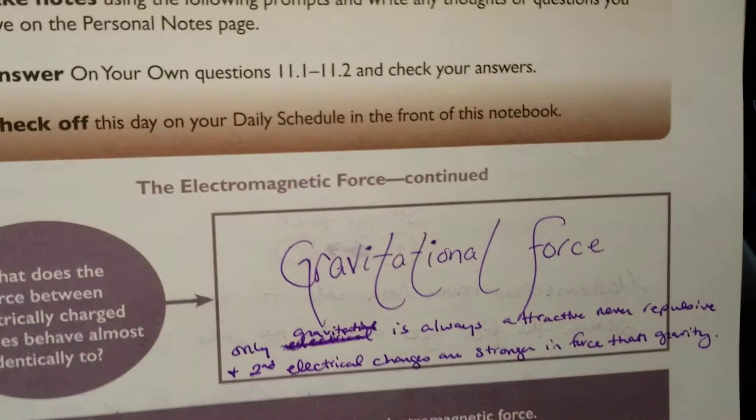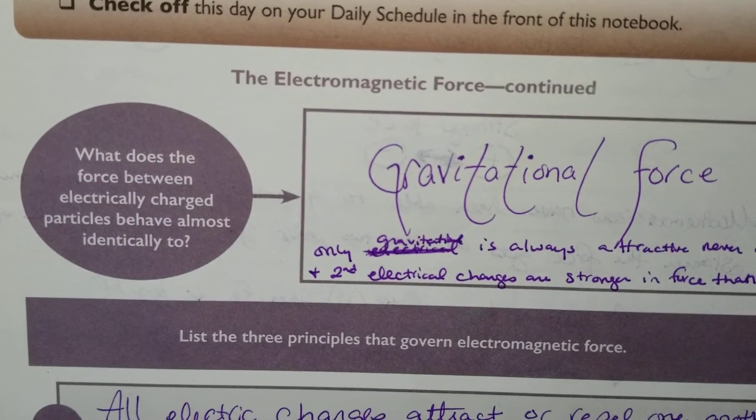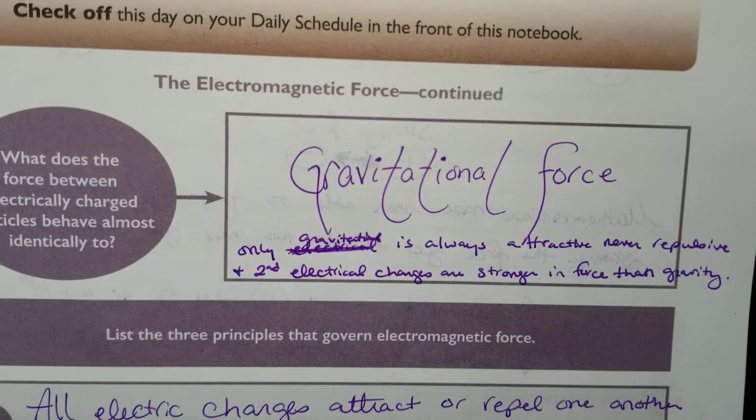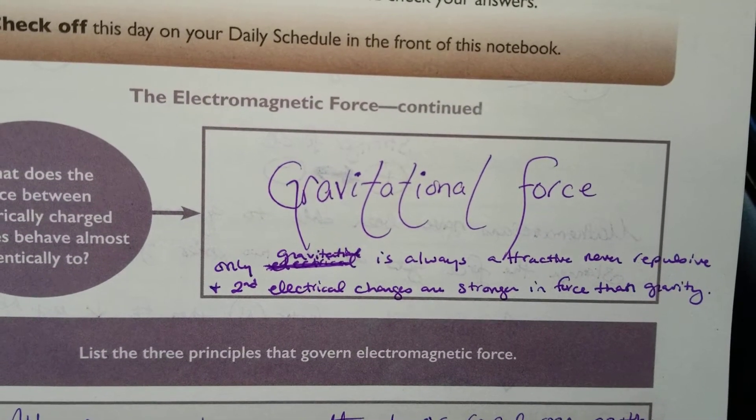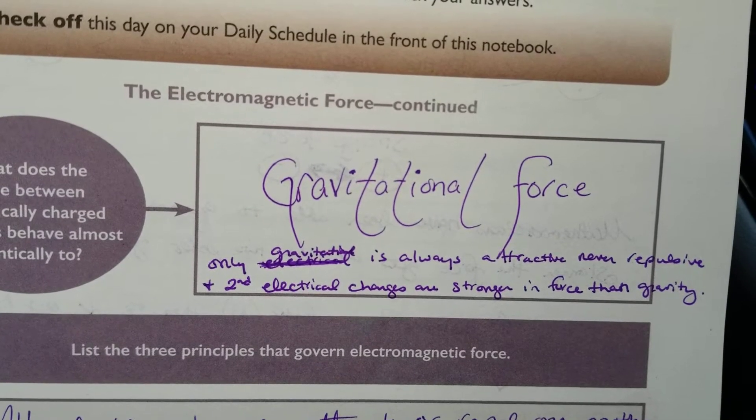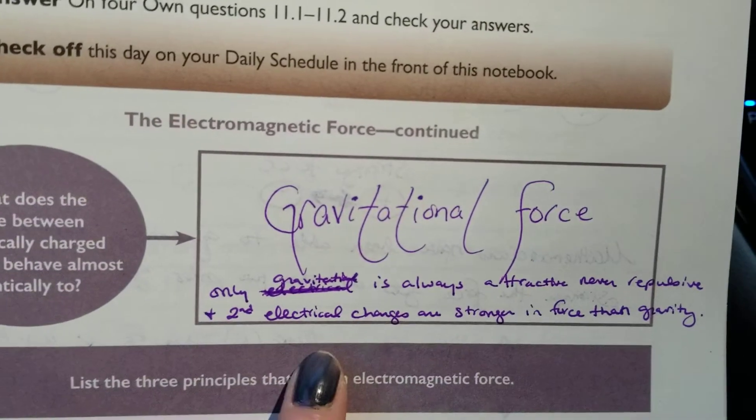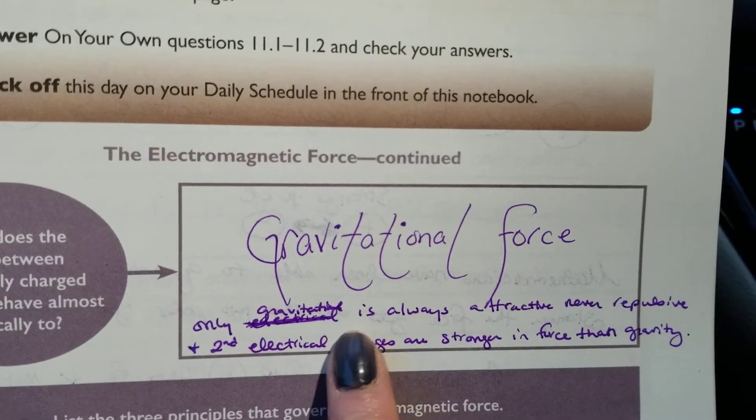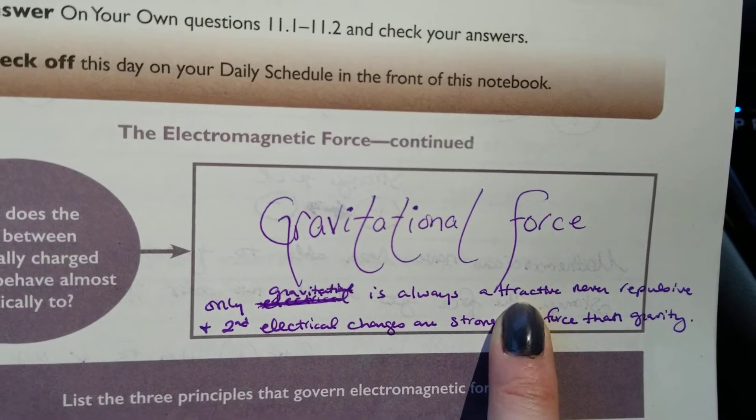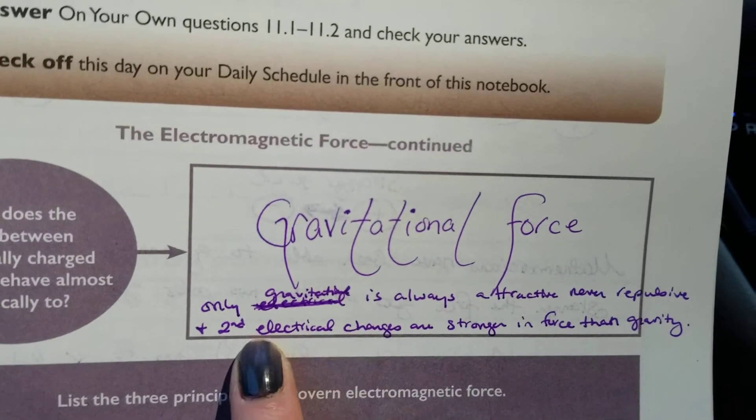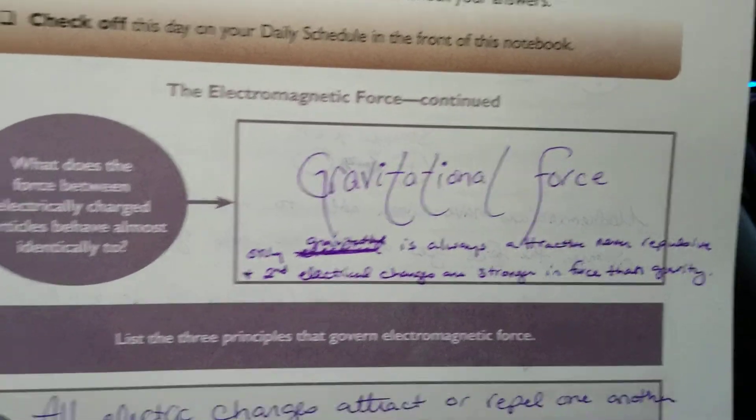Page 331. What does the force between electrically charged particles behave almost identically to? Gravitational force. The only difference is gravitational force is always attractive and never repulsive. And second, electrical charges are stronger in force than gravity. Gravity is only attractive, never repelling. Electrical charges are way, way stronger. Gravity, meh, a little bit strong, but not that strong.